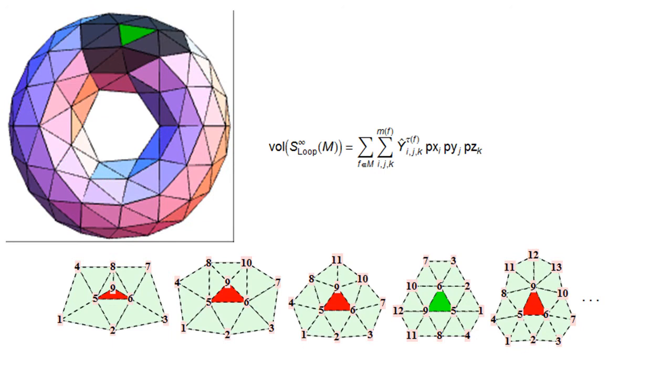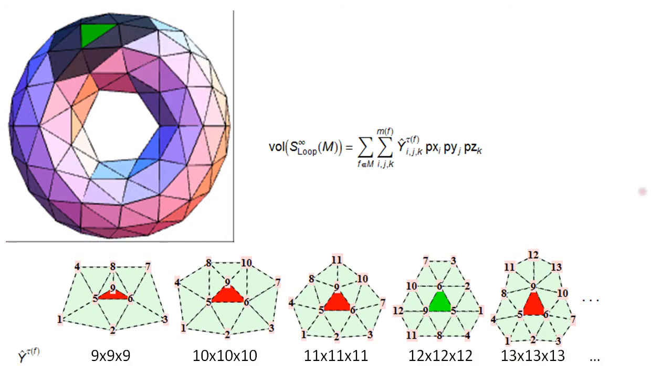Here we display valence 3, 4, 5, 6 and 7. The dimension of the trilinear form grows as the valence of the vertex increases.